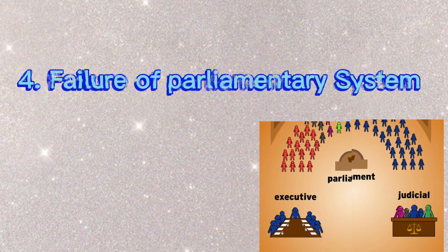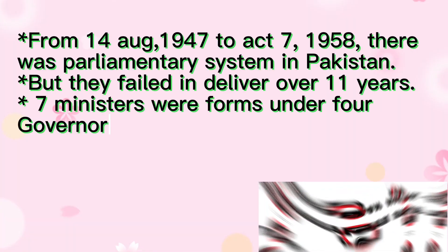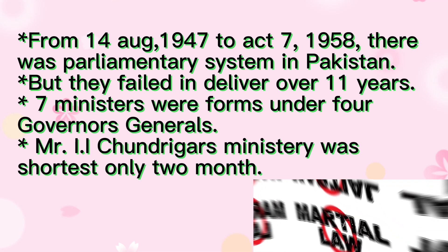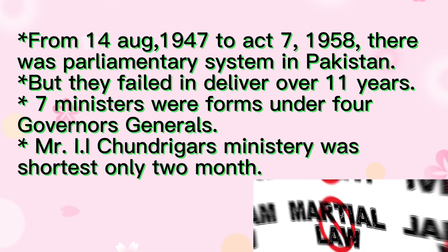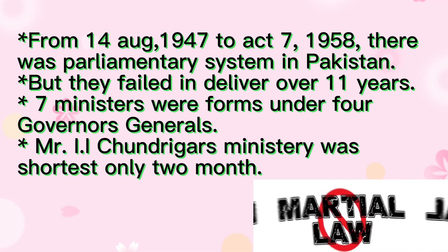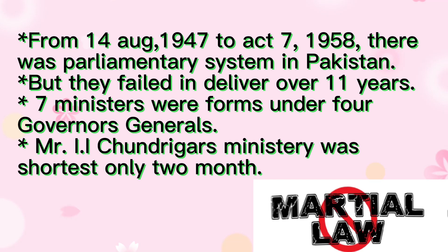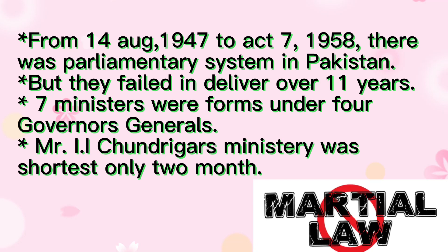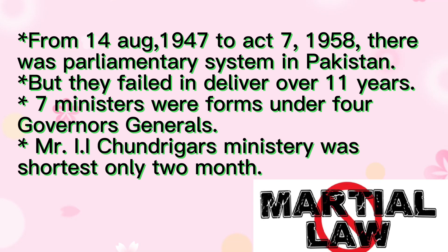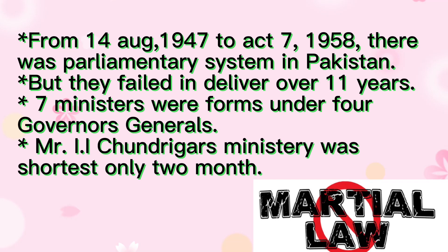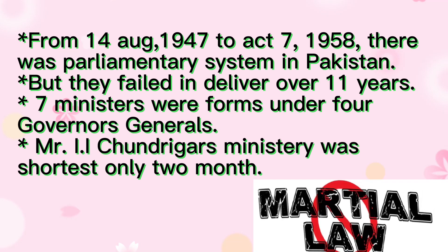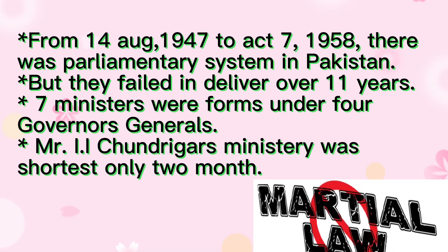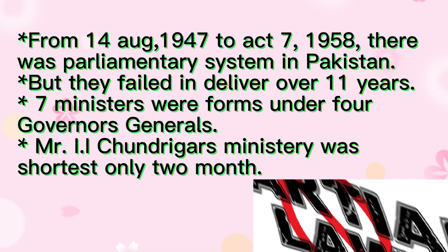Point 4: Failure of the parliamentary system. From August 14, 1947 to October 7, 1958, there was a parliamentary system in Pakistan, but it failed to deliver over 11 years. Seven ministries were formed under four governors-general. One ministry was the shortest, lasting only two months. Due to this, the country faced political and economic crises.